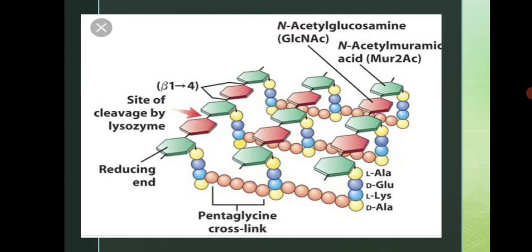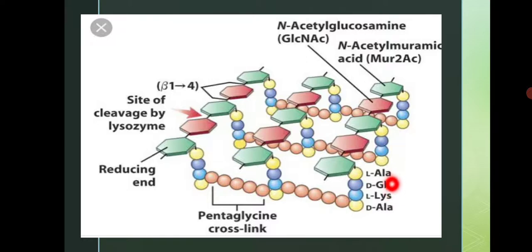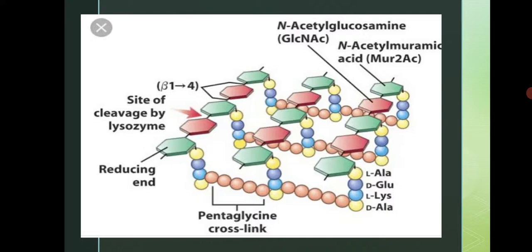To this N-acetylmuramic acid, four amino acids are shown: L-Ala, D-glutamate, L-lysine, and D-Ala. A fifth amino acid D-Ala is also present. That is why the fourth and fifth amino acids are both D-Ala in some representations. But at the last step of the synthesis process, this fifth amino acid is released, leaving just four amino acids. That is why in this diagram only four amino acids are shown. This is all about the structure of peptidoglycan.